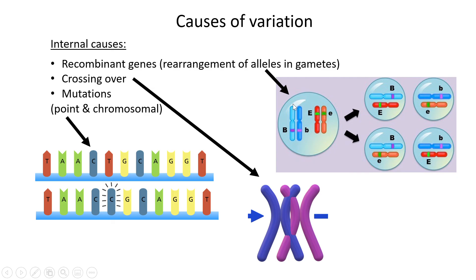How these chromosomes align when gametes form is completely random. A capital B allele can group with a capital E in one gamete, or a small b with a small e, or any other combination — it's all random. This gamete can then fuse with another individual's gamete to produce a heterozygous individual, or it can fuse differently to produce a homozygous individual. This is completely random, and recombinant genes is the first internal cause of variation.